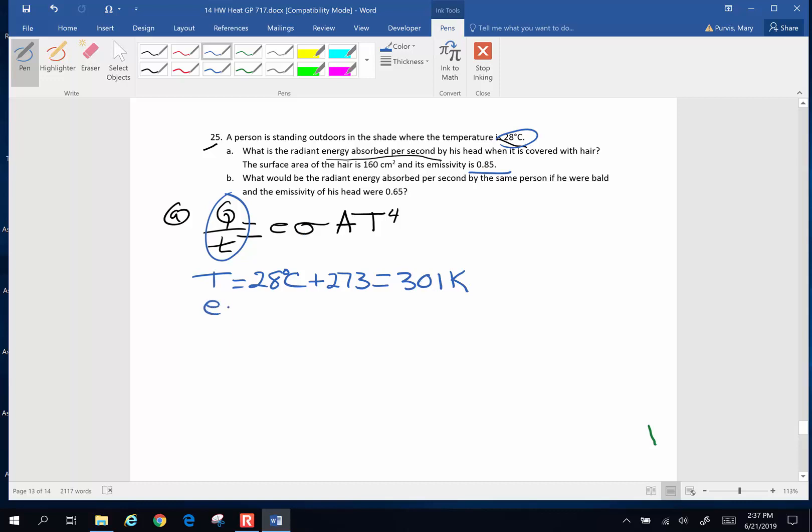Stefan Boltzmann, so emissivity is 0.85. Stefan Boltzmann's constant is a constant and that's on that constant sheet that I had you print early in the term or I gave you, if I have you in a face-to-face class.